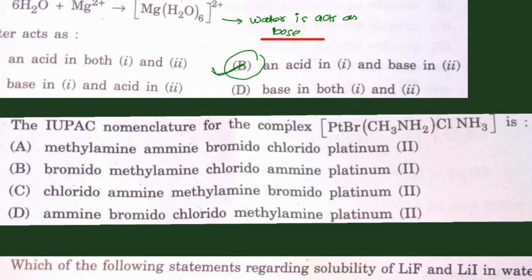The next question involves IUPAC nomenclature. The central metal ion is platinum attached with ammonia, chlorine, methylamine, and bromine. The oxidation state of platinum is +2. Following alphabetical order of ligands: ammine, bromido, chlorido, methylamine — platinum(II). The correct answer is D: amminebromidochlorido(methylamine)platinum(II).